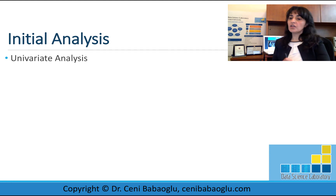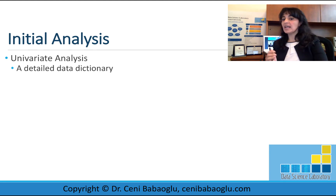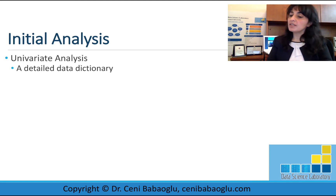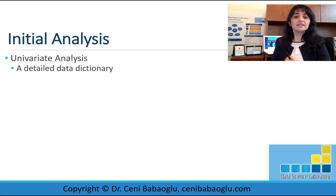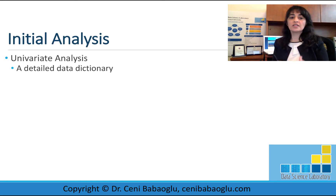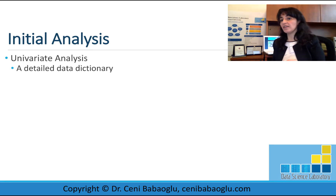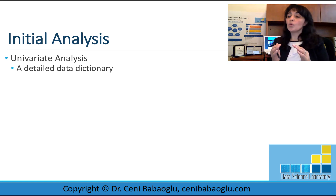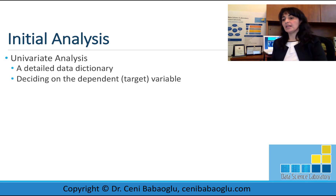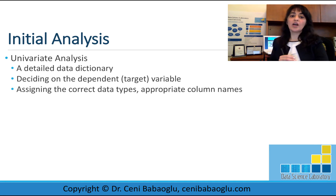In univariate analysis, first of all, we list all our variables and understand them one by one. We may be given a data dictionary, but I strongly recommend going over the meaning of each variable. We need to prepare a detailed data dictionary and ask questions such as: what is the source of this variable? Is it directly measured or calculated based on other variables? Does this variable have time associated with it? Getting answers from domain experts will help us understand the dataset better. Then we decide on the target variable — the variable that we want to predict.